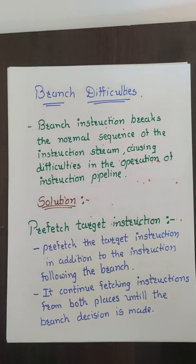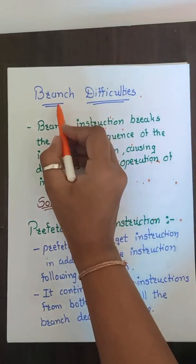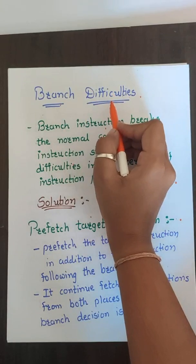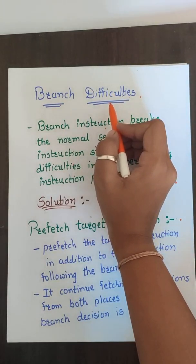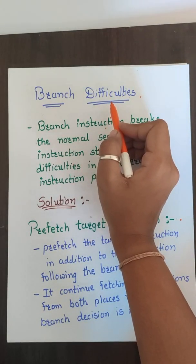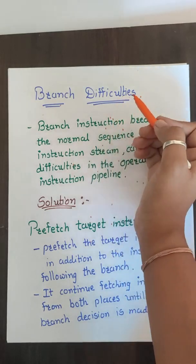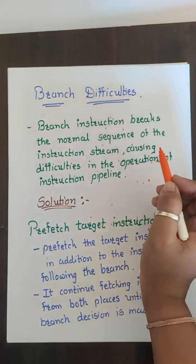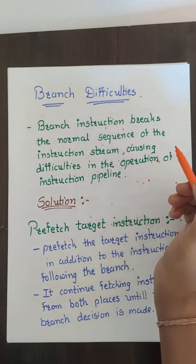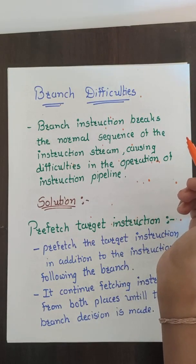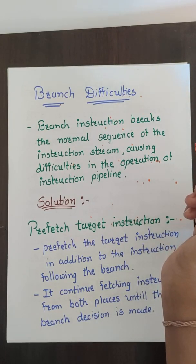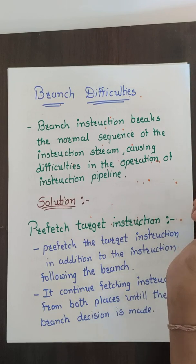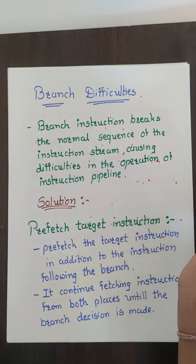In this video lecture we are going to study branch difficulties, a continued topic of the previous video on pipelining conflicts. We have three pipelining conflicts: resource conflict, data dependency, and branch difficulties. Resource conflict can be resolved by memory interleaving.